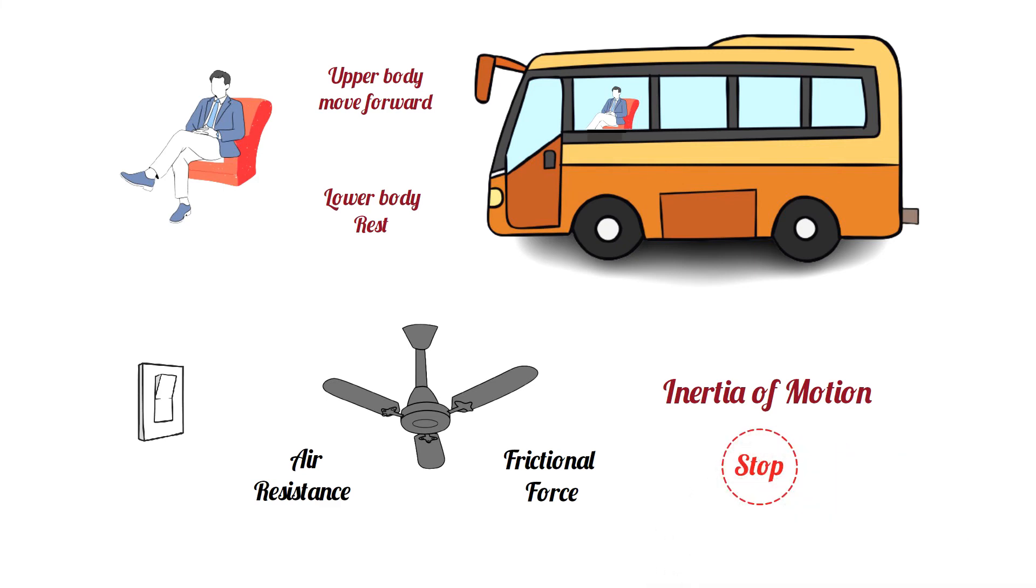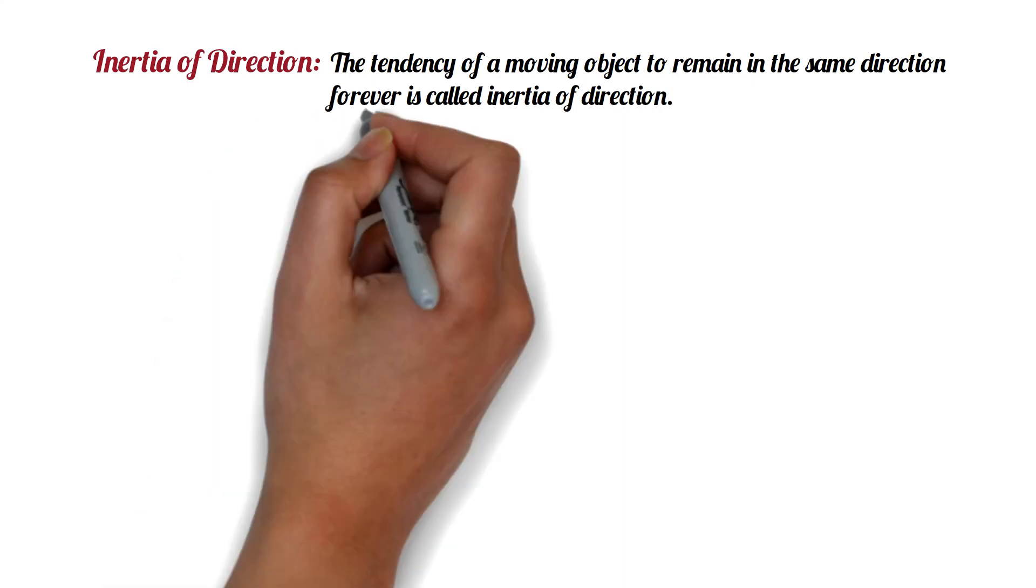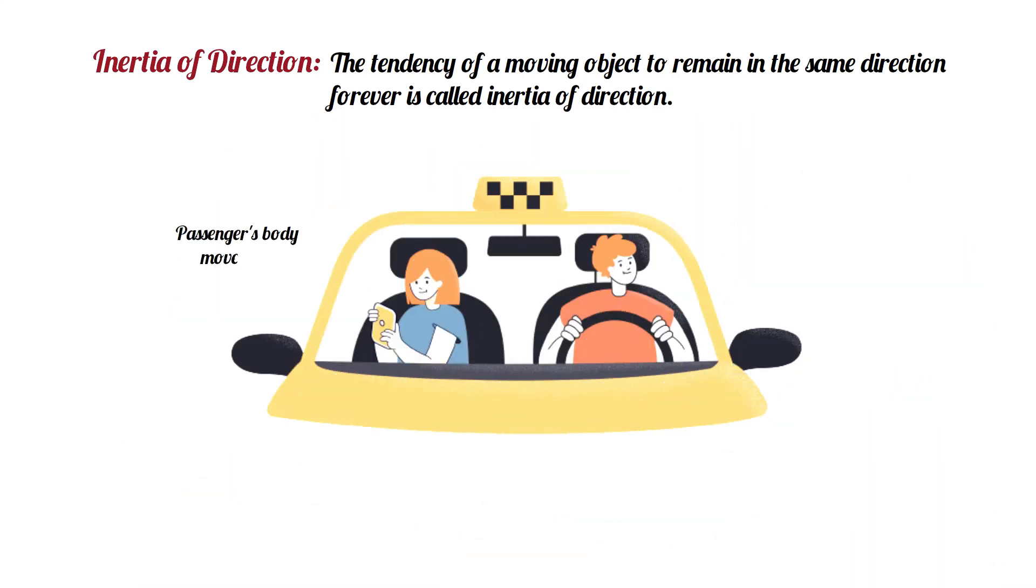Inertia of direction. The tendency of a moving object to remain in the same direction forever is called inertia of direction. For example, in a car, the passenger's body moves to the side when the car makes a sharp turn. If you observe, you will find many more such examples of inertia in your daily life.